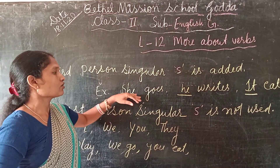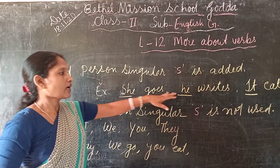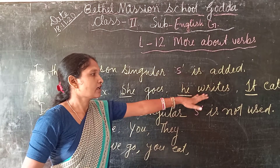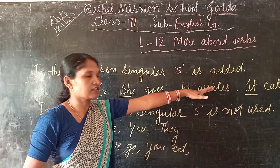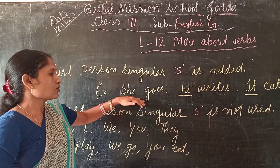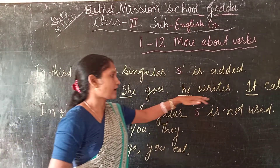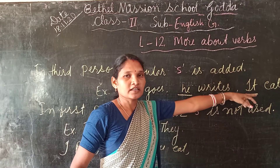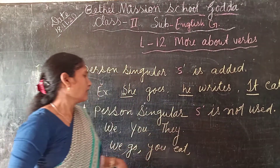We don't write 'she go' or 'it eat.' No — it's 'she goes,' 'he writes,' and 'it eats.' Those are the correct forms for third person singular.